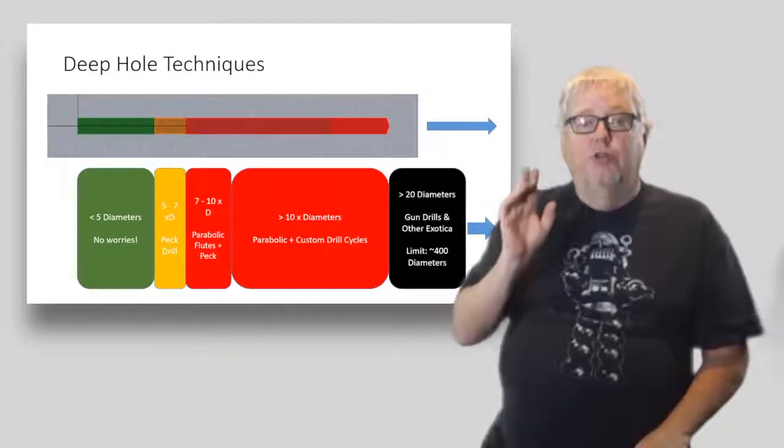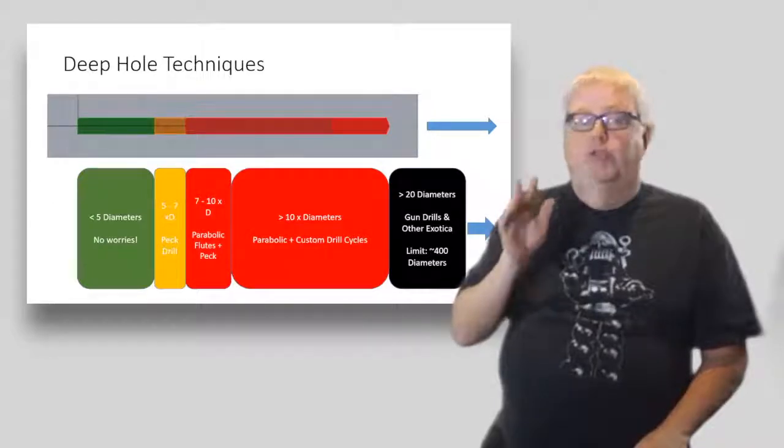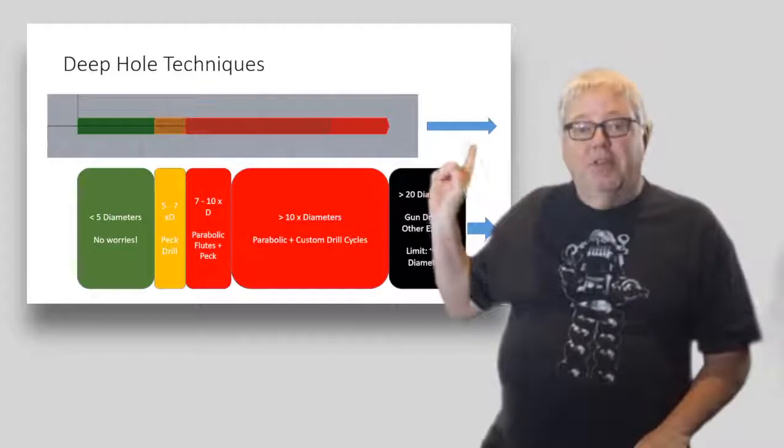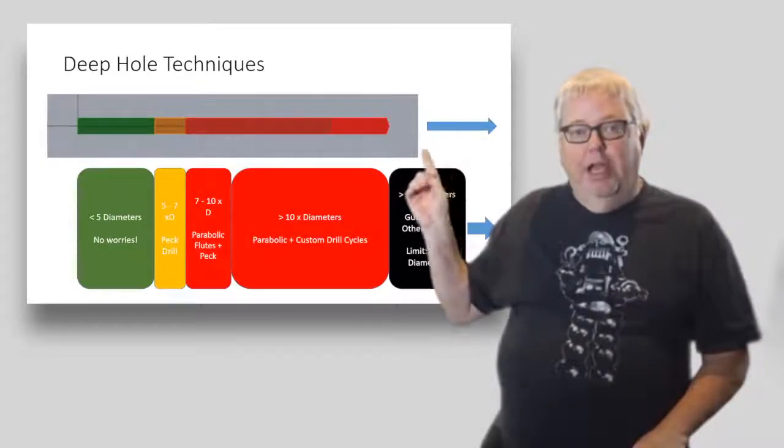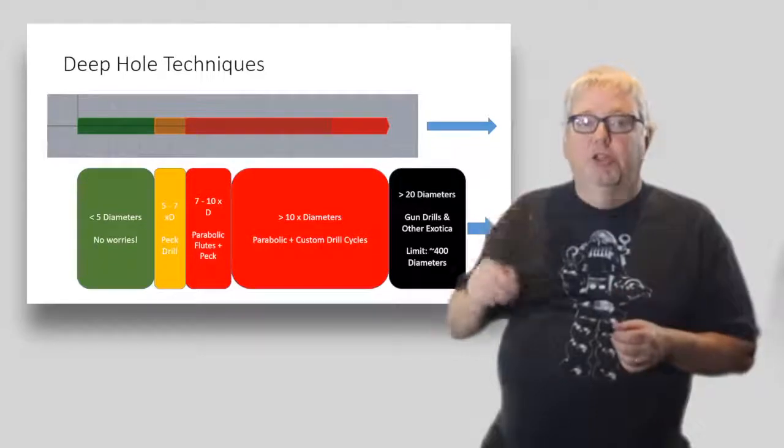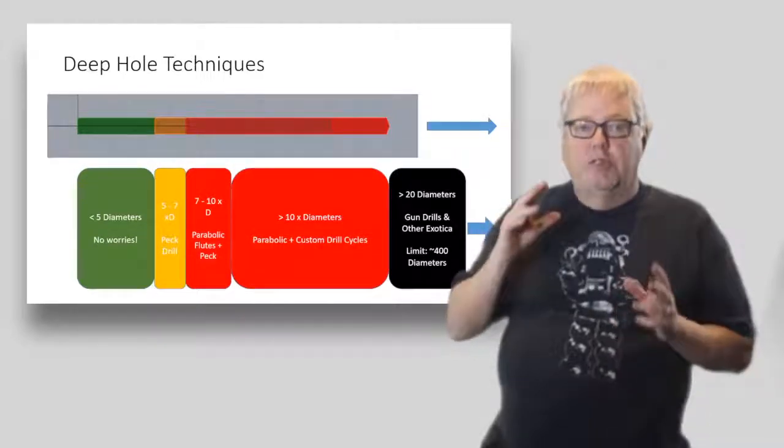From seven to ten diameters, you need a peck drill and you should also be using twist drills with special parabolic flute geometry. From about 10 diameters up to 20, you can still peck drill with parabolic flute drills, but you'll need to consider programming custom drill cycles for best results.